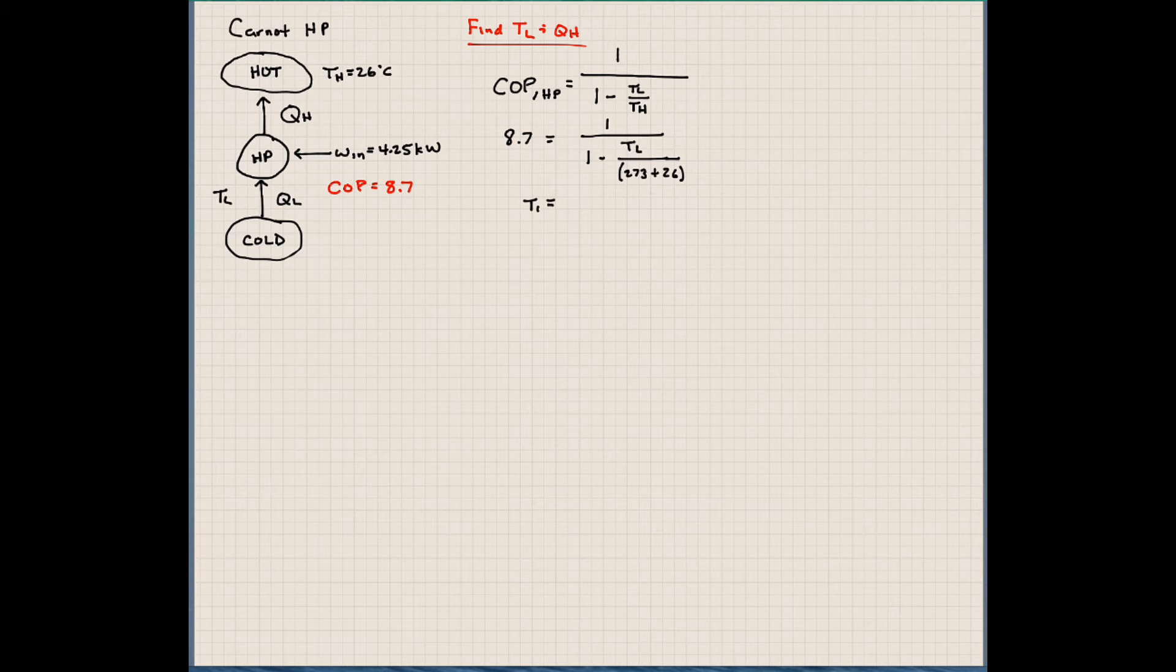273 plus 26, which is the temperature of our hotter heat source. Solving for TL in this equation, and I'll again save the algebra, leave the algebra out to save time, we can see that this comes out to be 264.6 Kelvin. That's the temperature of our heat sink.